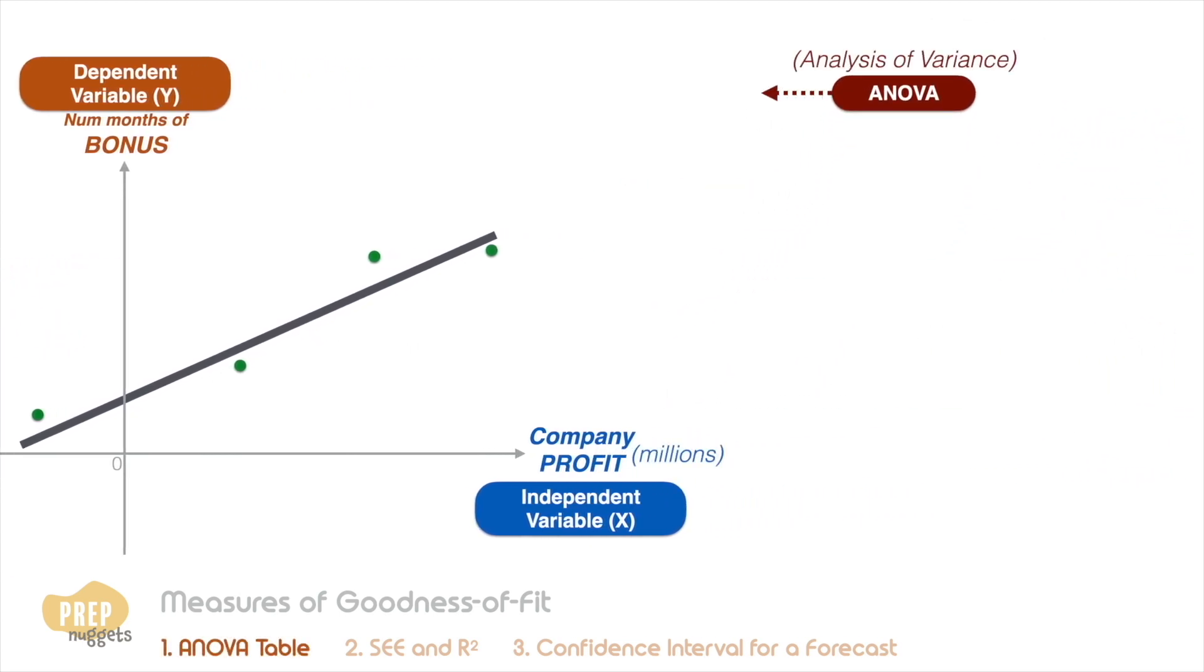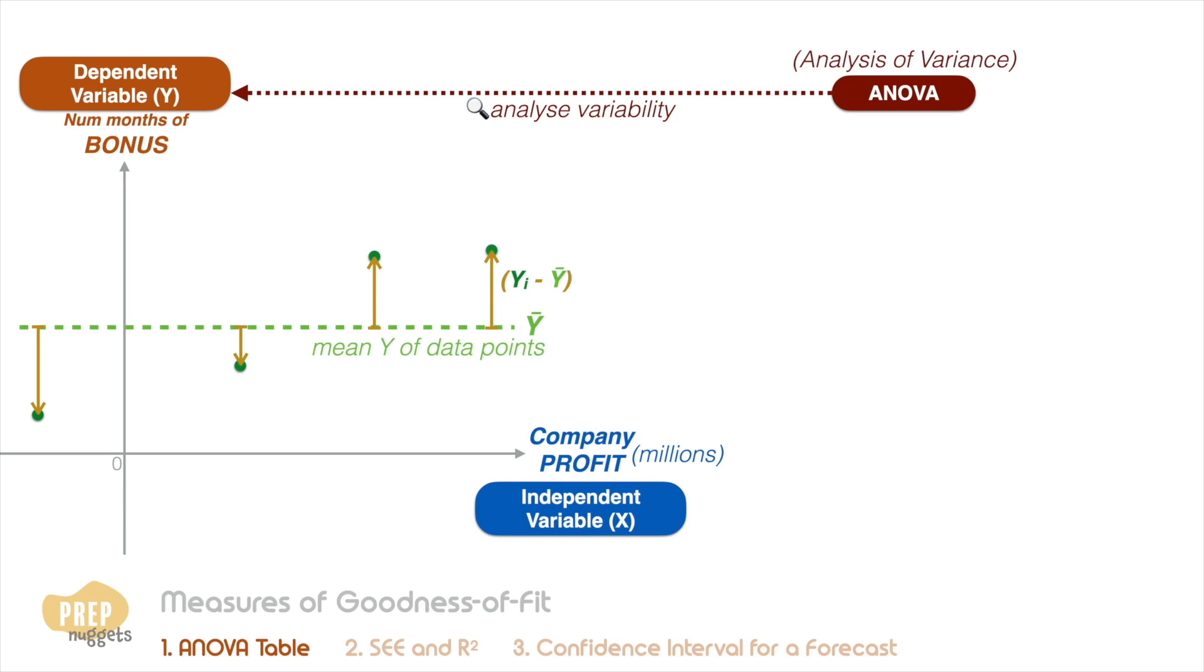ANOVA is a statistical procedure for analyzing the total variability of the dependent variable. Let's first strip out our regression model. We have a bunch of data points and one meaningful way to measure variability is to reference the distance from the mean of the dependent variable.